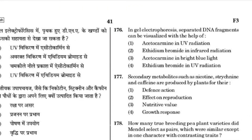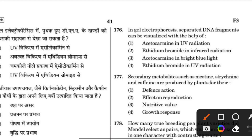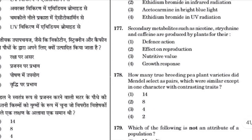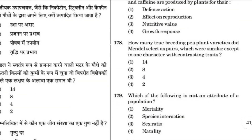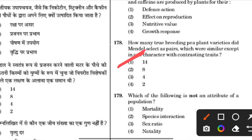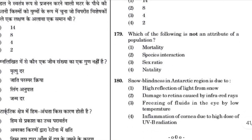Select the option including all sexually transmitted diseases — gonorrhea, syphilis, and genital herpes. In water hyacinth and water lily, pollination takes place through insects or wind. In gel electrophoresis, separated DNA fragments can be visualized with the help of ethidium bromide under UV radiation. Secondary metabolites such as nicotine, strychnine, and caffeine are produced by plants for defense. Mendel selected 14 true-breeding pea plant varieties with contrasting characters; the answer for 178 is 14.